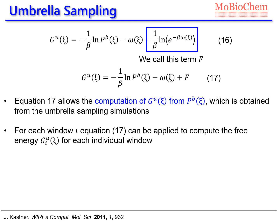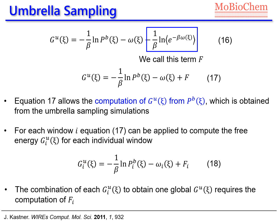We apply equation 17 to each window of the reaction coordinate (equation 18), computing the free energy for each individual window i. Combining these individual free energy terms into a global free energy along the reaction coordinate requires computing the constant F, and there are several approaches to do this.